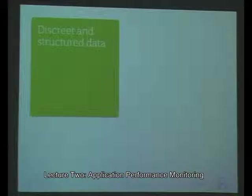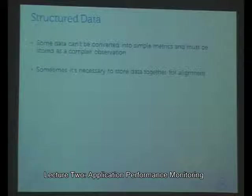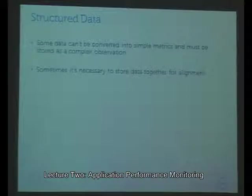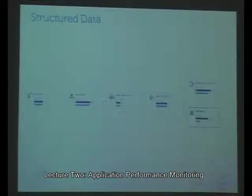The last topic is discrete and structured data. Some data you can't convert into a metric — we call that a complex observation. When you have complex data, like the names of all students who took a class, you can't turn that into a metric; you have to store it as a big structure. An example of structured data is a topology: what was the topology of my application, where did the time go in the app server, the web server, the network? It's complex — you can't turn it into one metric.